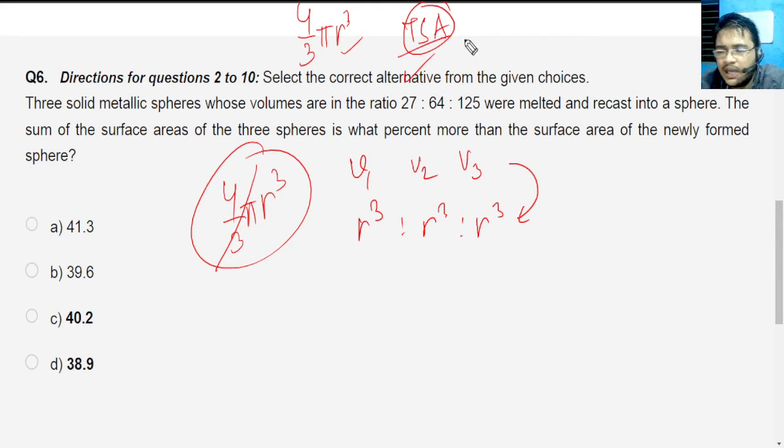So this is what is written: 27, 64, and 125. If I have to transform r₁³:r₂³:r₃³ into r₁:r₂:r₃, all I need to do is place a cube root. Cube root of 27 is nothing but 3, cube root of 64 is nothing but 4, and cube root of 125 is nothing but 5. These are the ratios.